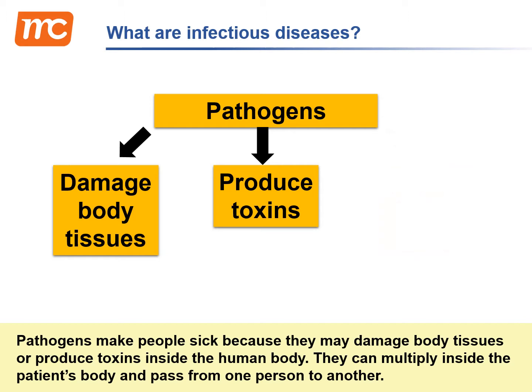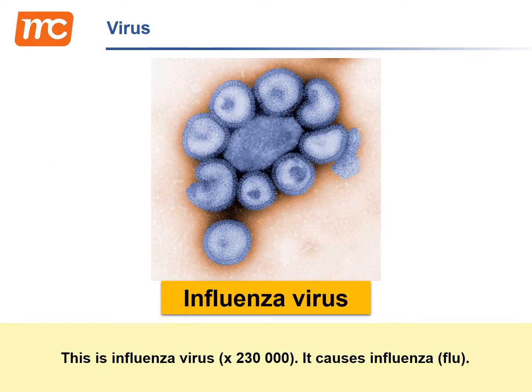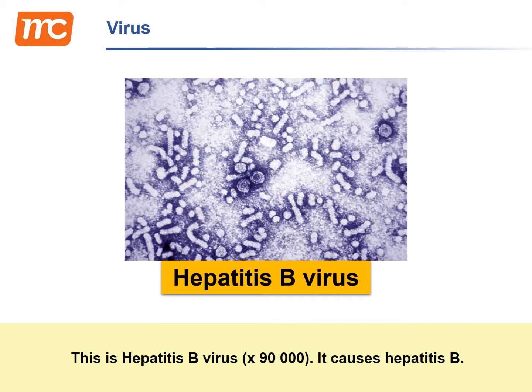Pathogens can multiply inside the patient's body and pass from one person to another. This is Influenza virus — it causes Influenza. This is Hepatitis B virus — it causes Hepatitis B.